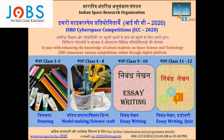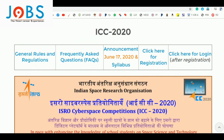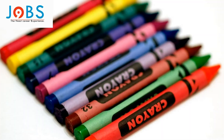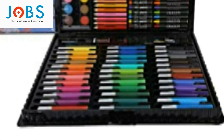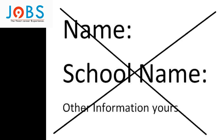ISRO Cyberspace Competition 2020 Guidelines. First, the topic of competition will be sent on the registered email and available on the ISRO website. Second, A3 size white paper or chart paper should be used. Third, use water, wax or pencil colors for drawing. Fourth, write the registration number in the top right corner of the drawing paper. Fifth, writing the participant name, school name, etc. on the drawing paper shall make the participant invalid.